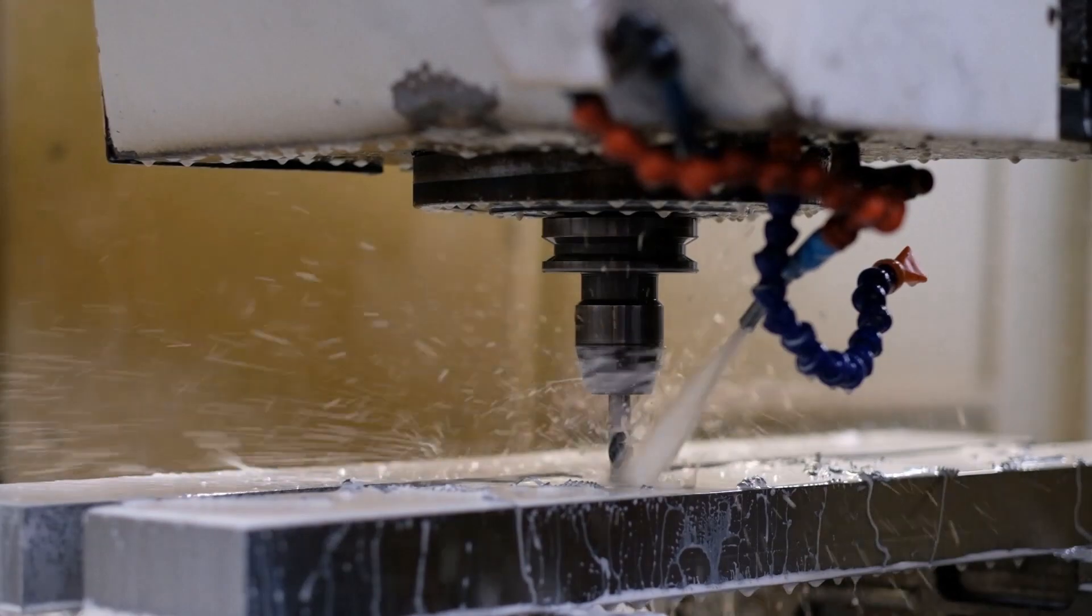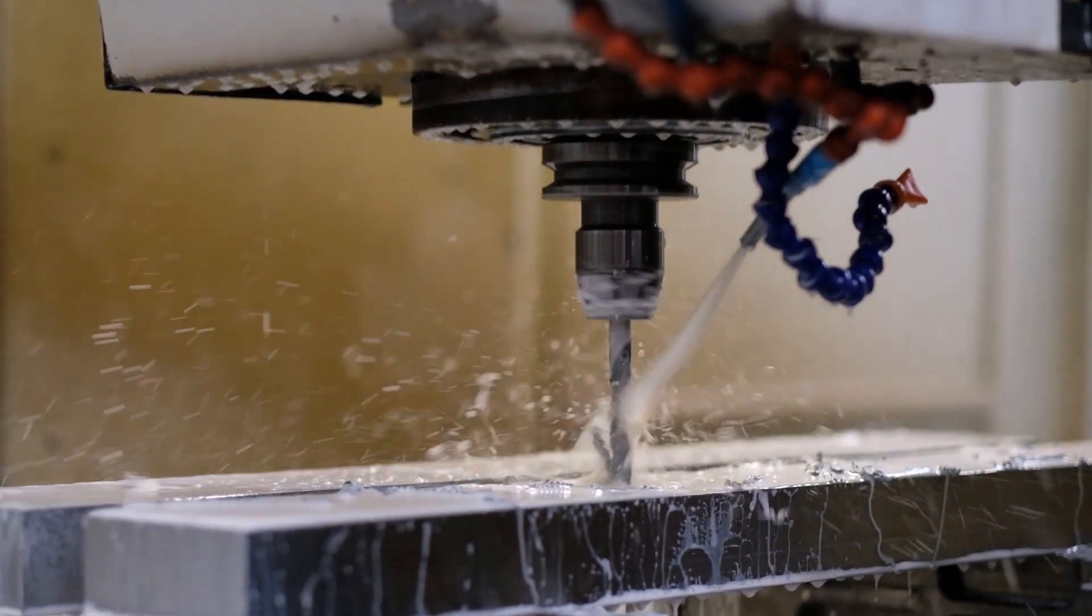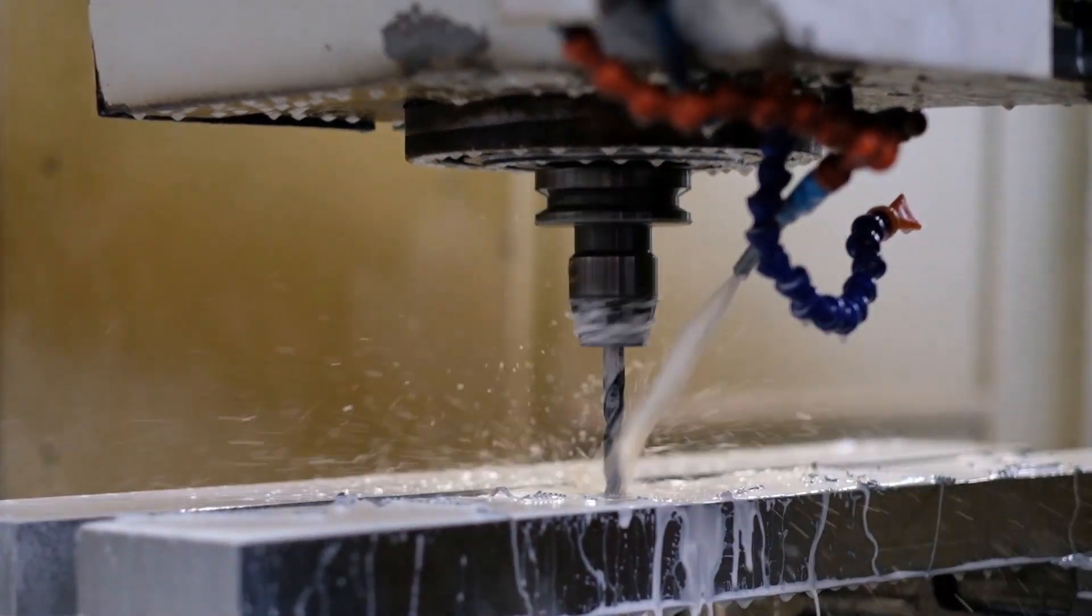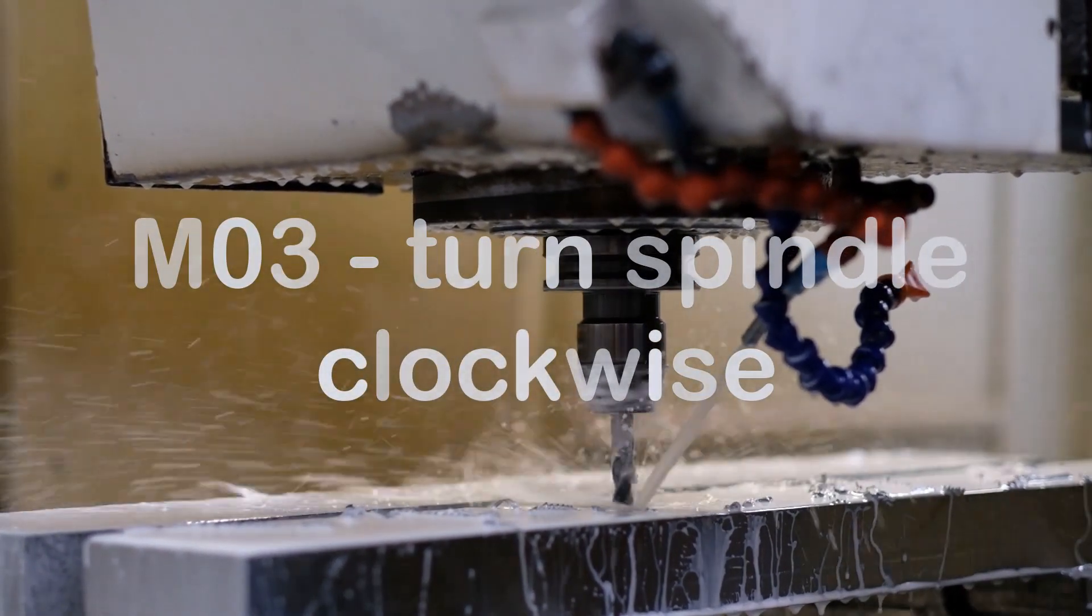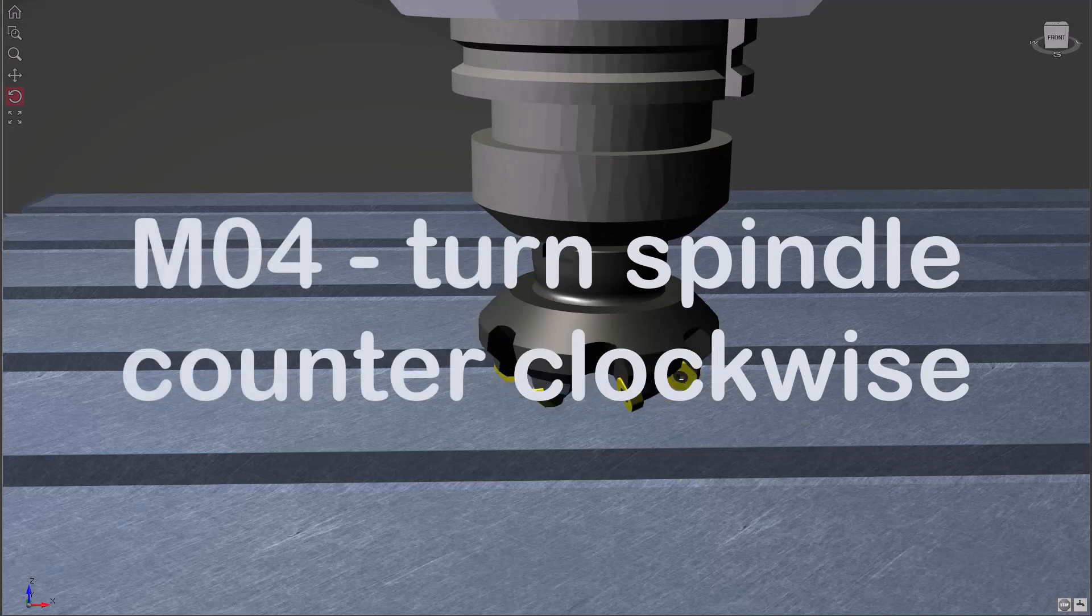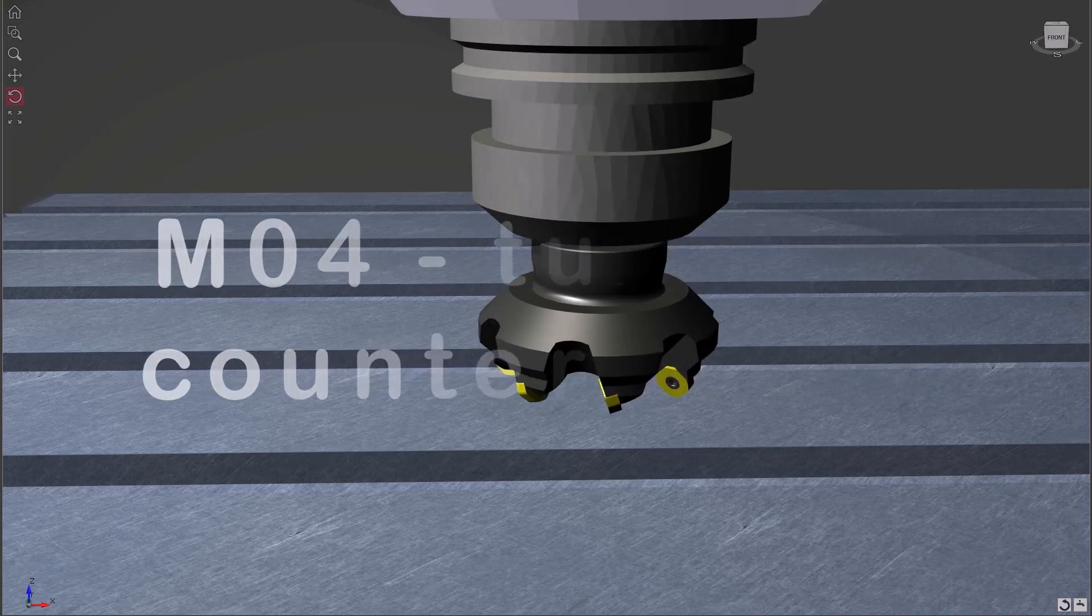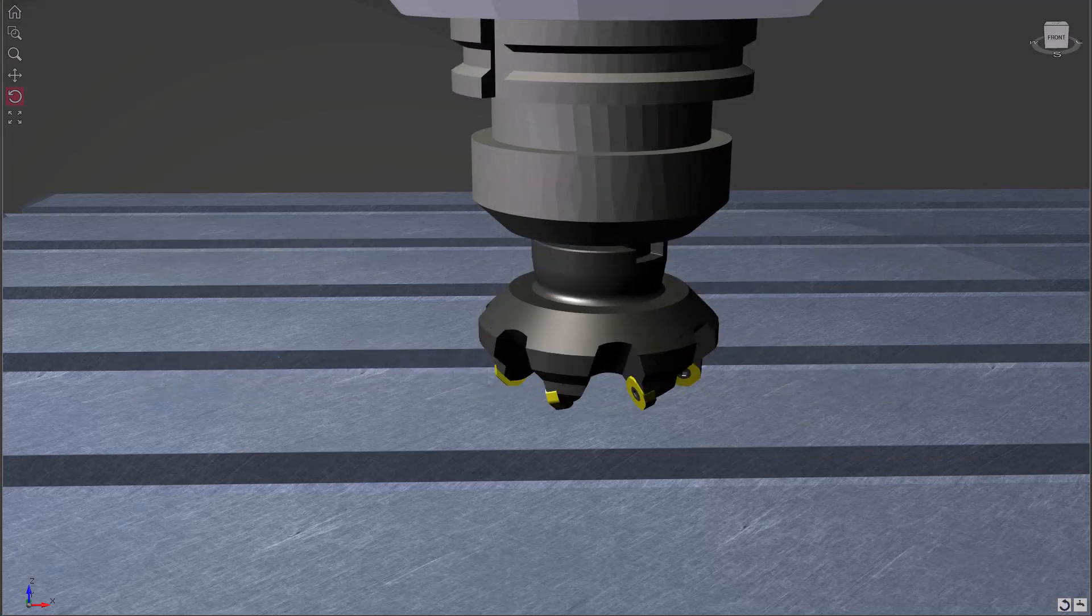M03 and M04 control the direction of the spindle rotation. M03 starts the spindle turning clockwise, also known as the forward direction. Conversely, M04 starts the spindle turning counterclockwise, or in the reverse direction.